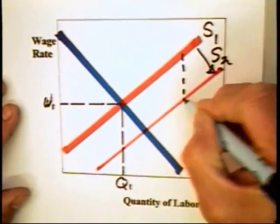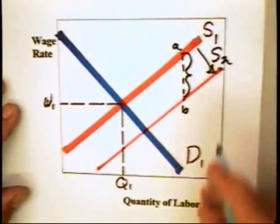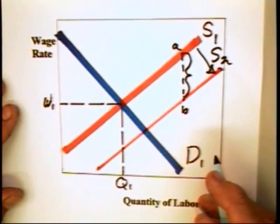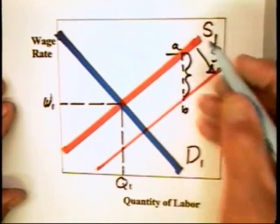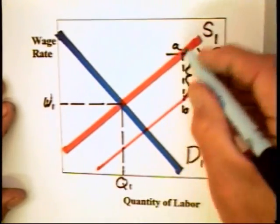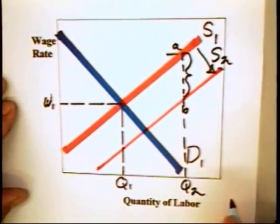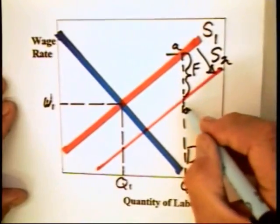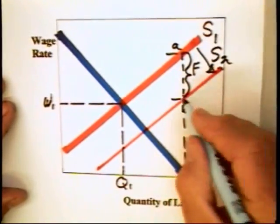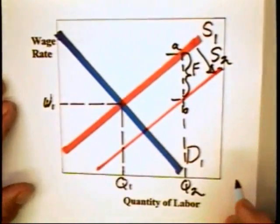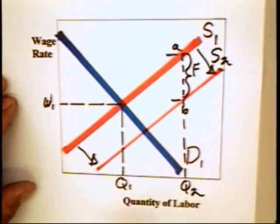As a consequence, the supply curve increases as a result of the availability of the fringe. This vertical distance here, A to B, can be some indication of the value that workers put on the fringe benefit. At one time they needed a wage of A in order to provide a quantity of labor equal to Q2. Now, with the fringe benefit, they're willing to work for as little as this wage rate here, B, whatever that happens to be over on the vertical axis. So the supply curve can be expected to increase.